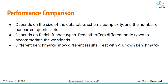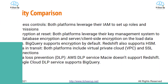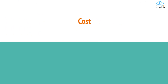Both data warehouse solutions provide very similar security features. On access controls, both platforms leverage their IAM to set up rules and permissions. On encryption at rest, both platforms use their key management systems for database encryption and client-side encryption on load data files — BigQuery supports encryption by default, and Redshift also supports HSM. On data in transit, both platforms include virtual private cloud (VPC) and SSL connections. On data loss prevention, AWS DLP service does not support Redshift at the time of this video, but Google Cloud DLP supports BigQuery.